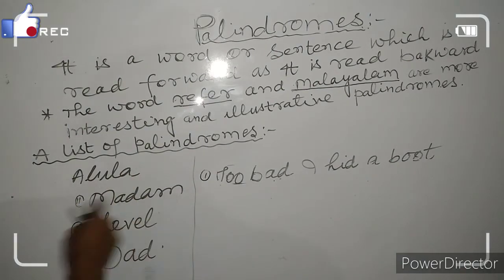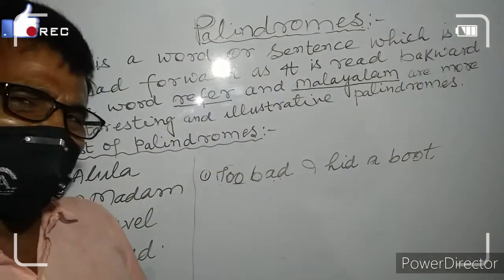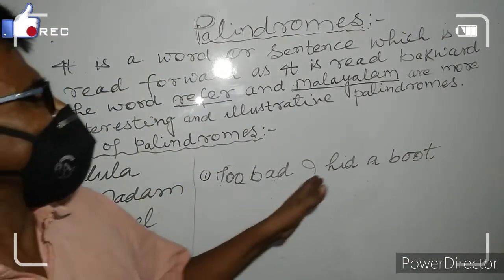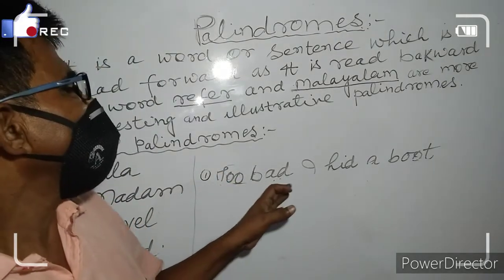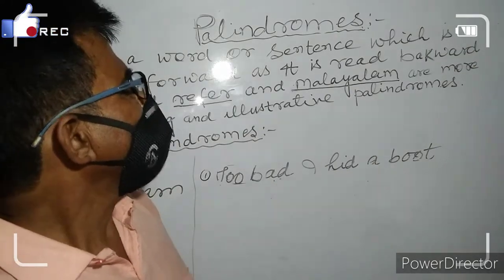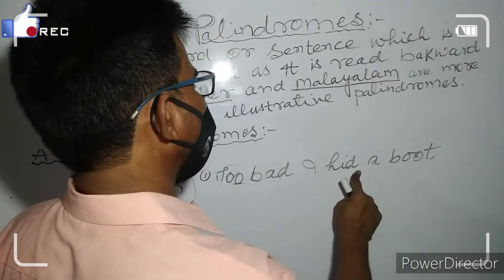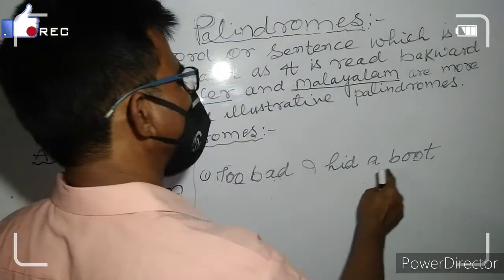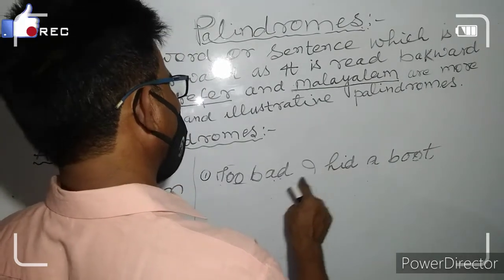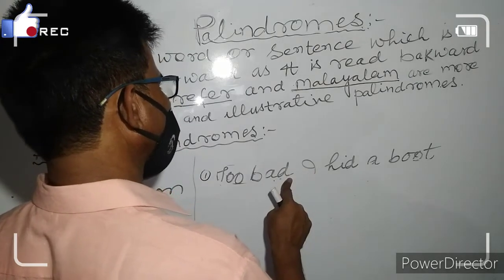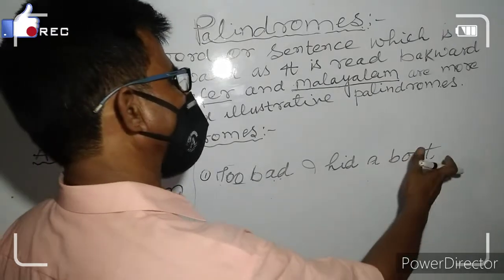Here is the list of palindromes: 'alula', 'madam', 'level', 'dead', 'dad'. I have also given phrase examples: 'too bad I hid a boot'. Here, 'too' is T-double-O, 'bad', 'I', 'hid', and 'a boot' is B-double-O-T.